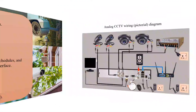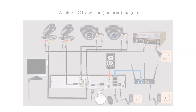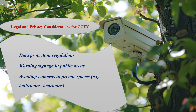Here is the wiring diagram for reference. This is an analog system but using a hybrid DVR that also has the capability to view remotely while receiving analog signals. As you can see, the bullet and dome cameras get their power from the power supply and feed into the DVR via coaxial cable. We also have the IP system here, where IP cameras feed into the NVR via the PoE switch and router.